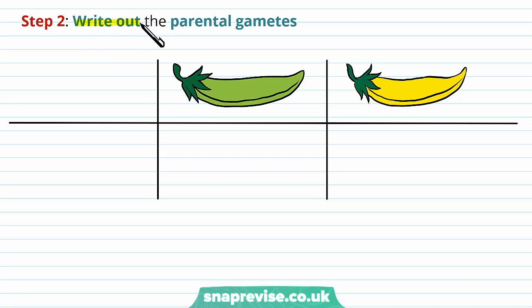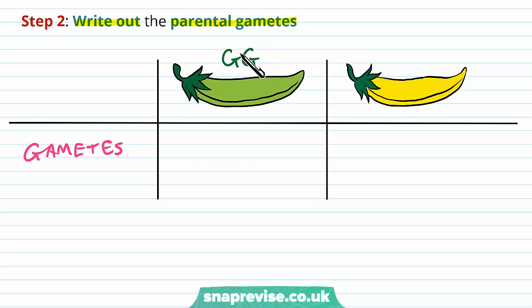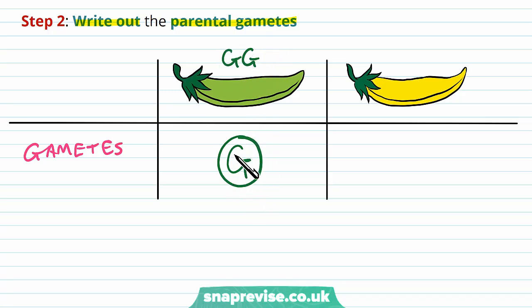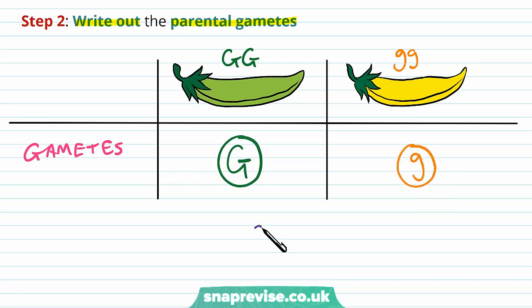First, write out the parental gametes. If this one is big G, big G, then the only gametes it can ever make are those of the big G — it will always be the big G. For the yellow pea pod it's little g, little g, so the gamete will always be little g. And remember, we always circle gametes, so these must have a circle around them.